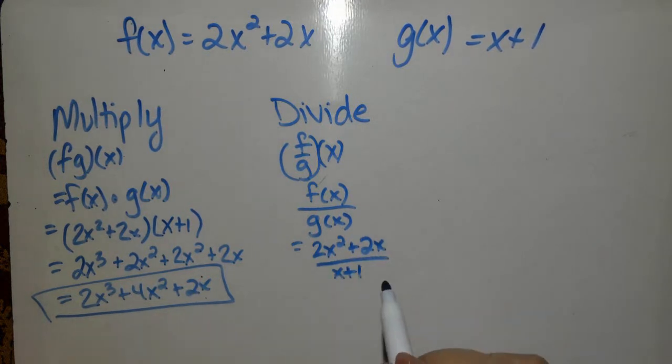Whenever we divide, we want to factor. So I look at my numerator, and I can take a 2x out of both of those, and it leaves x plus 1 over x plus 1.